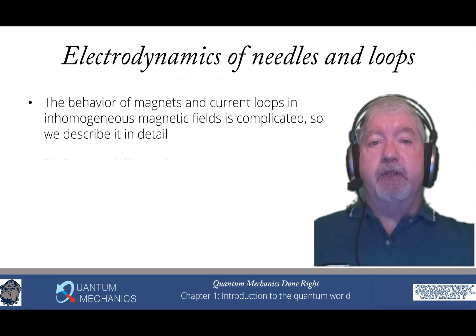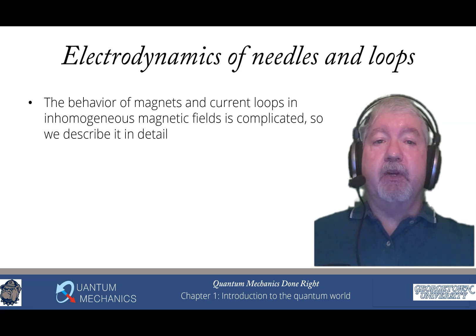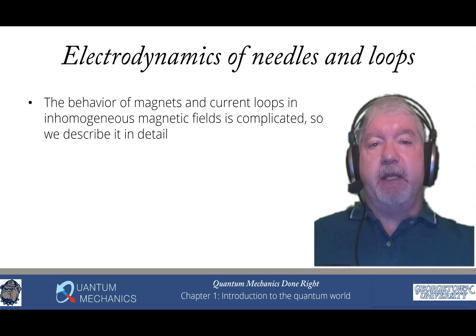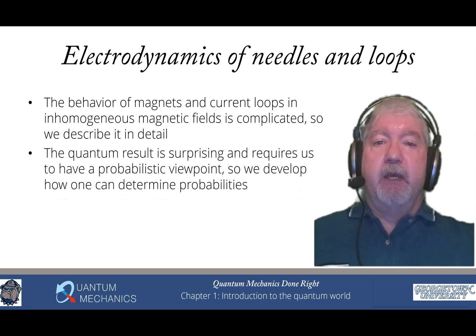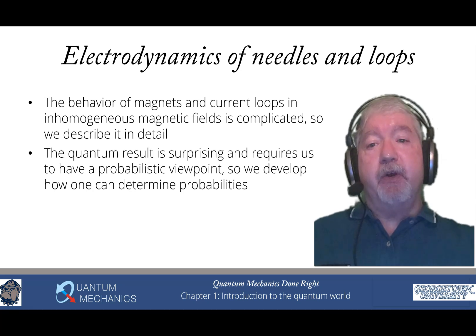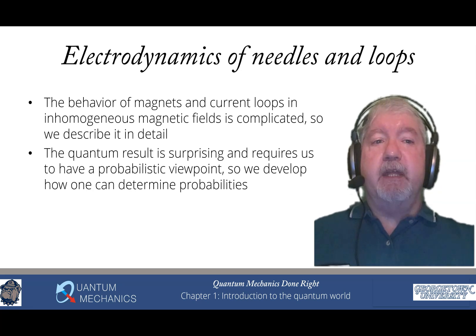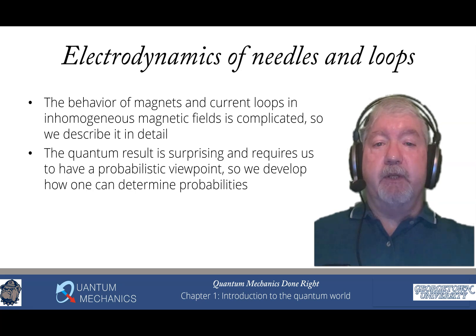And as I mentioned, the behavior of magnets and current loops in inhomogeneous magnetic fields is very complicated. So we take essentially an entire chapter to describe how that works in detail. We then show what you would expect to get from a classical Stern-Gerlach experiment. And then we show you what the quantum result is. And it's very surprising. And the only way that you can understand that result is by bringing in a probabilistic viewpoint. So we develop how you calculate and work with probabilities as part of the chapter as well.